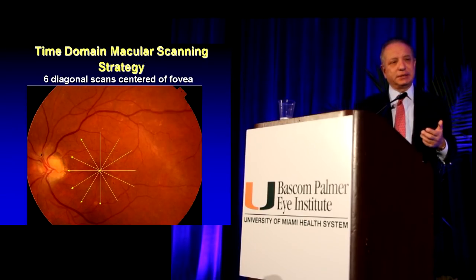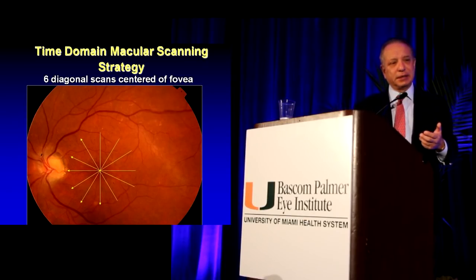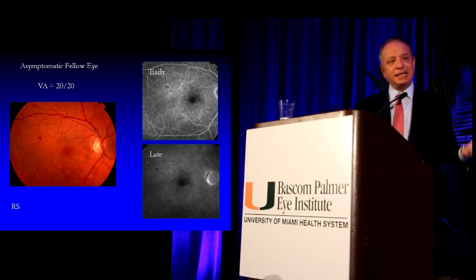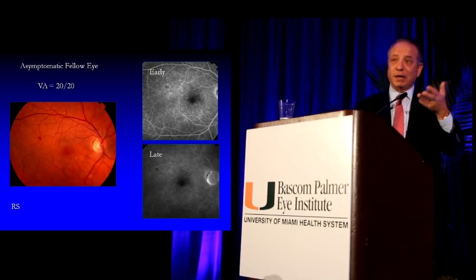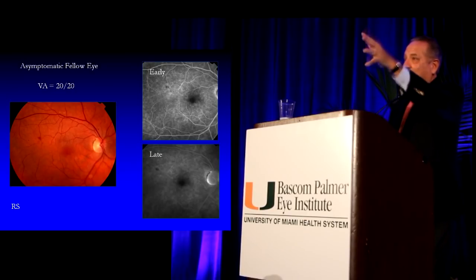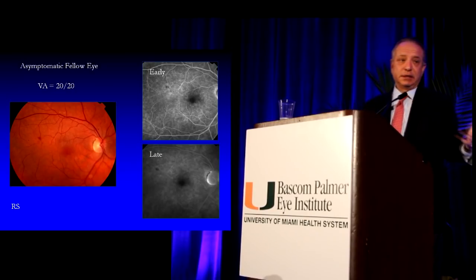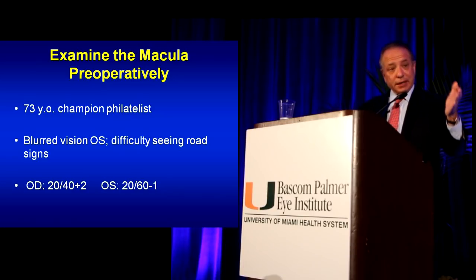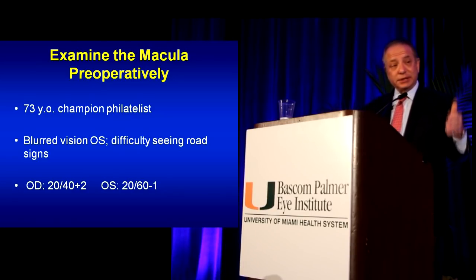If you have a time-domain scanning strategy, you really should look at all of these scans. This is the asymptomatic fellow eye — the right eye. Remember I said always examine both eyes. The other eye, if I had the OCT, would be abnormal.